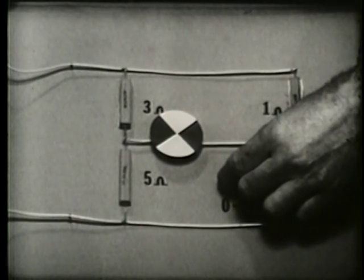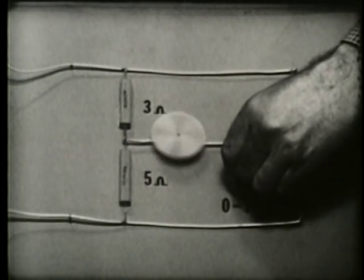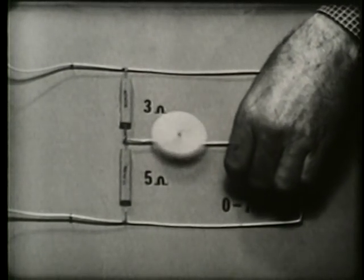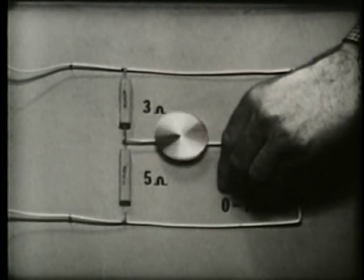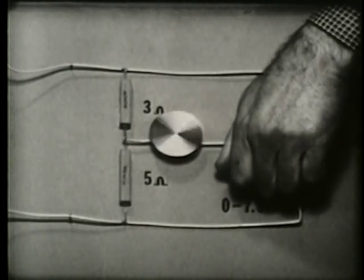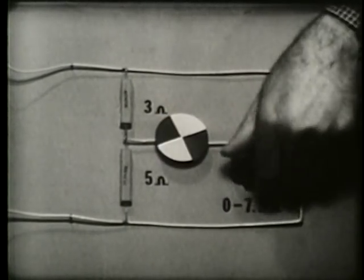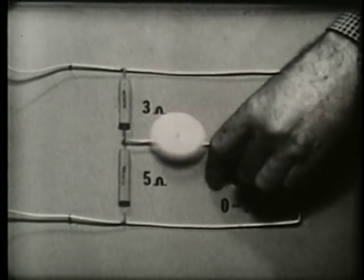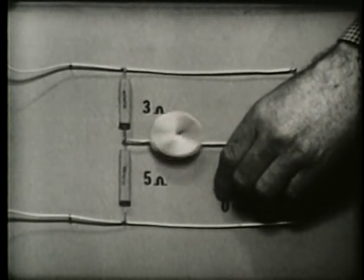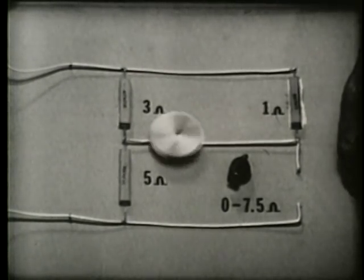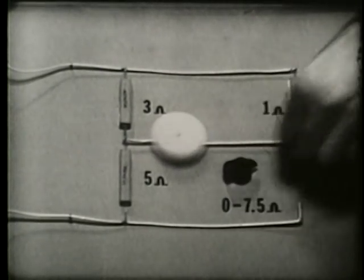Any deviation from the proper course will unbalance the bridge and cause the motor to turn. Being off course in one direction causes the motor to turn clockwise to correct the course. Being off in the opposite direction causes the motor to turn counter-clockwise to correct the course. Being slightly off balance causes the motor to turn slowly; a greater imbalance causes the motor to turn faster.